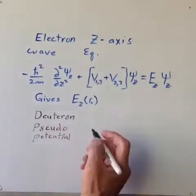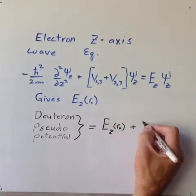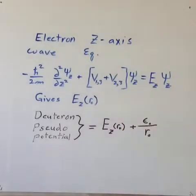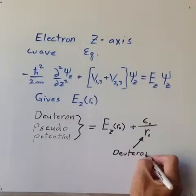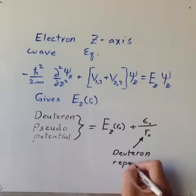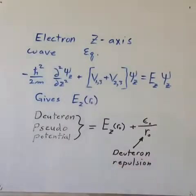We can combine the electron z-axis energy as a function of separation with the deuteron repulsion energy to give a pseudo-potential for the two deuterons. This is completely analogous to the molecular hydrogen analysis.